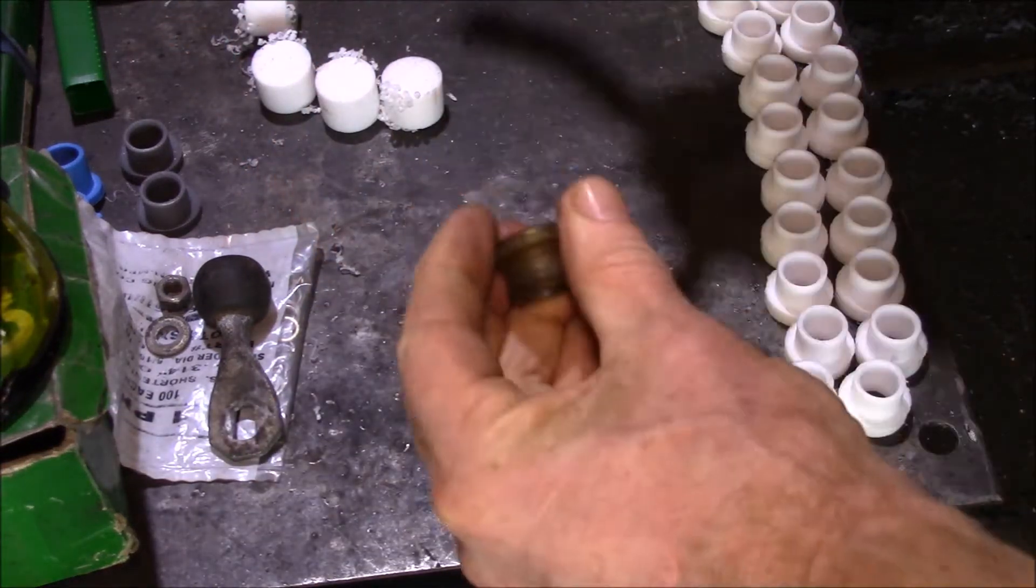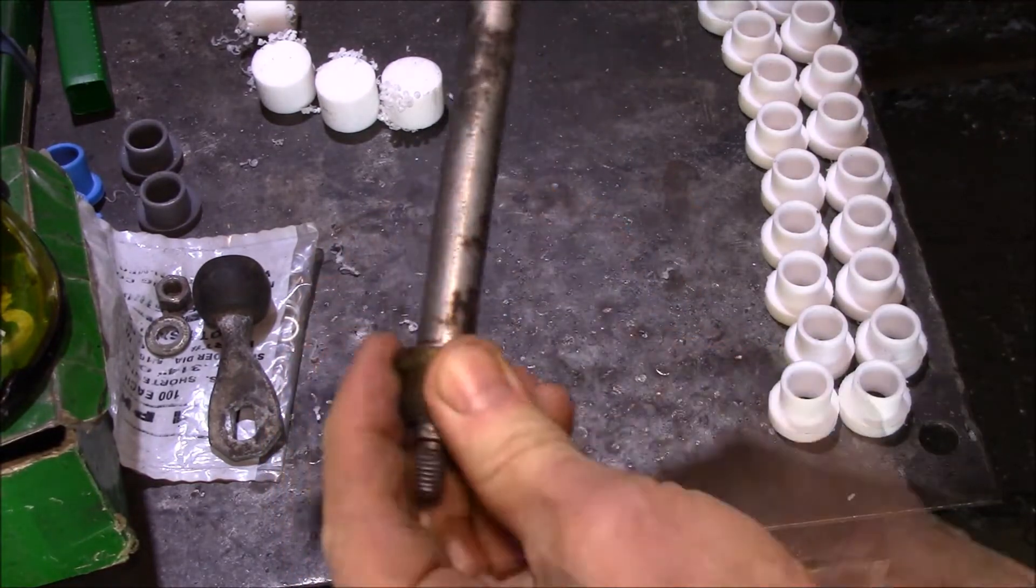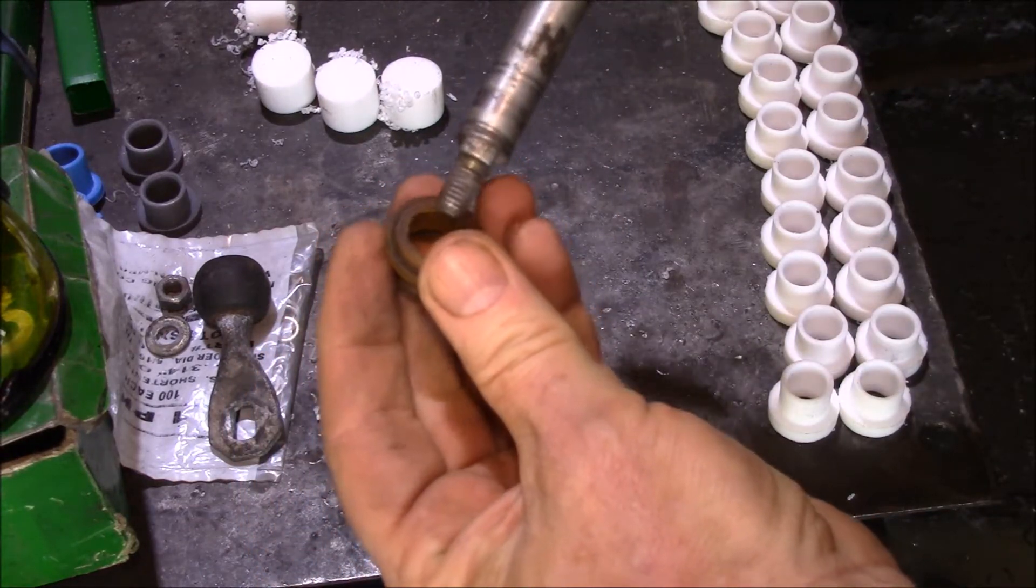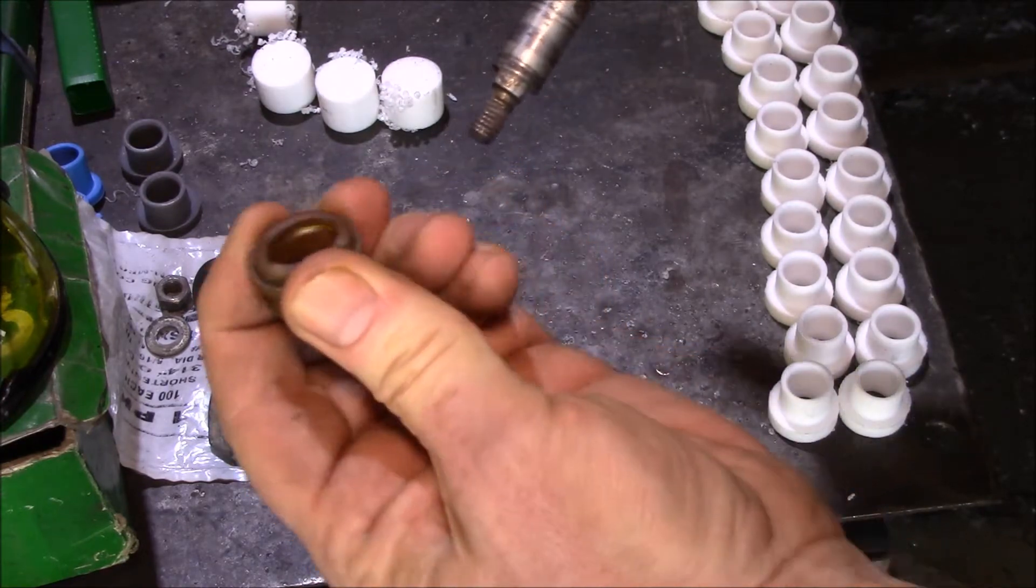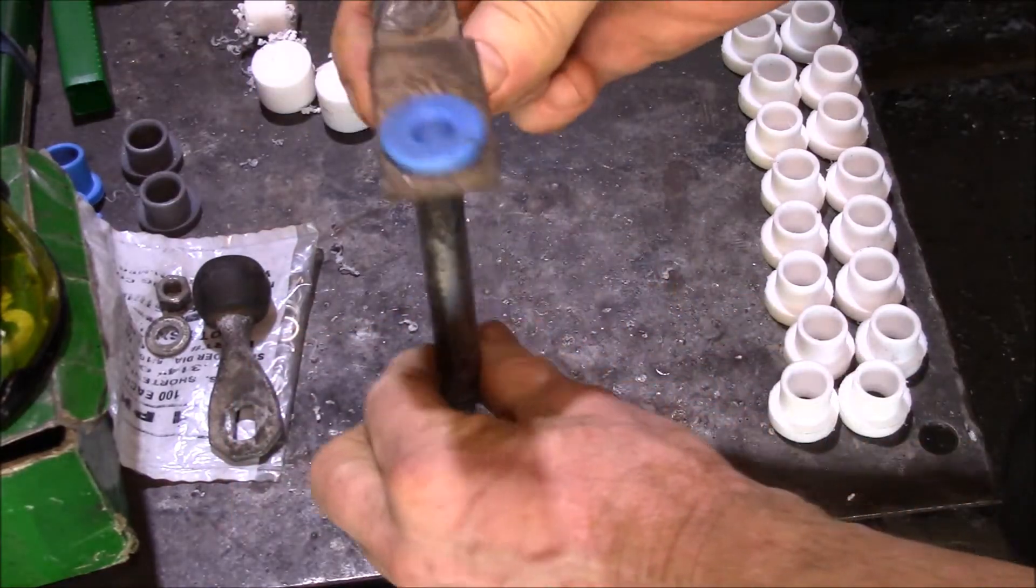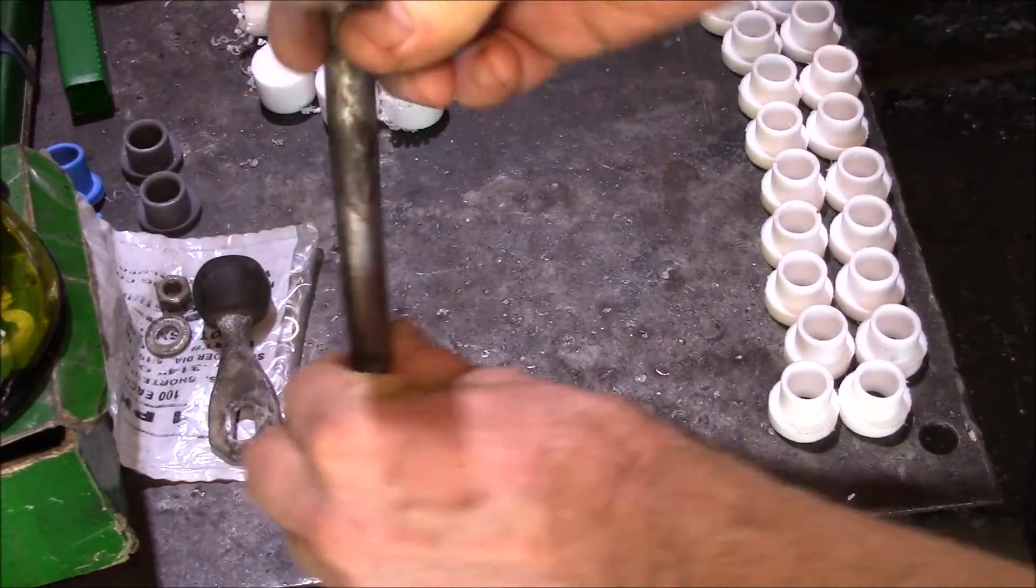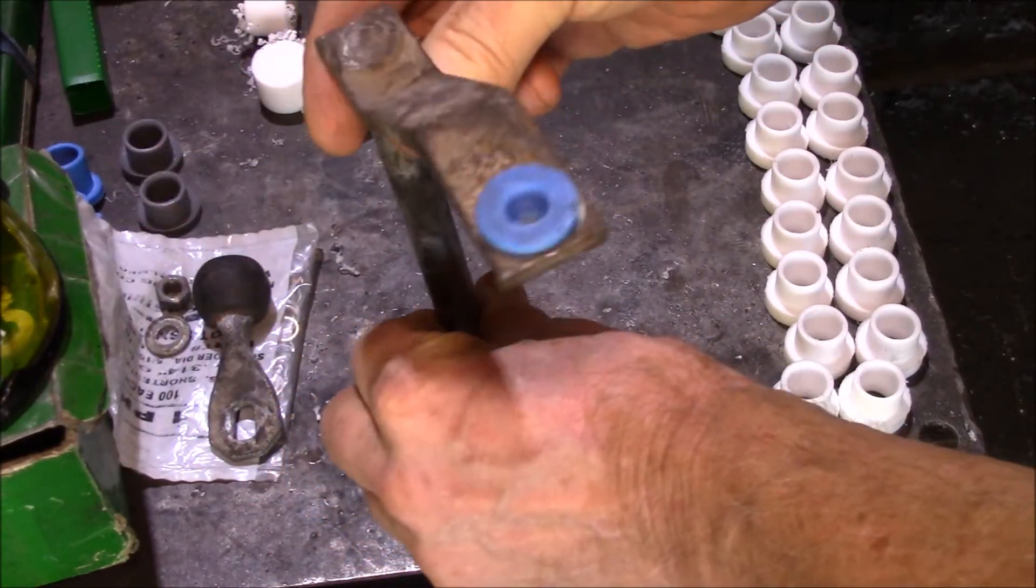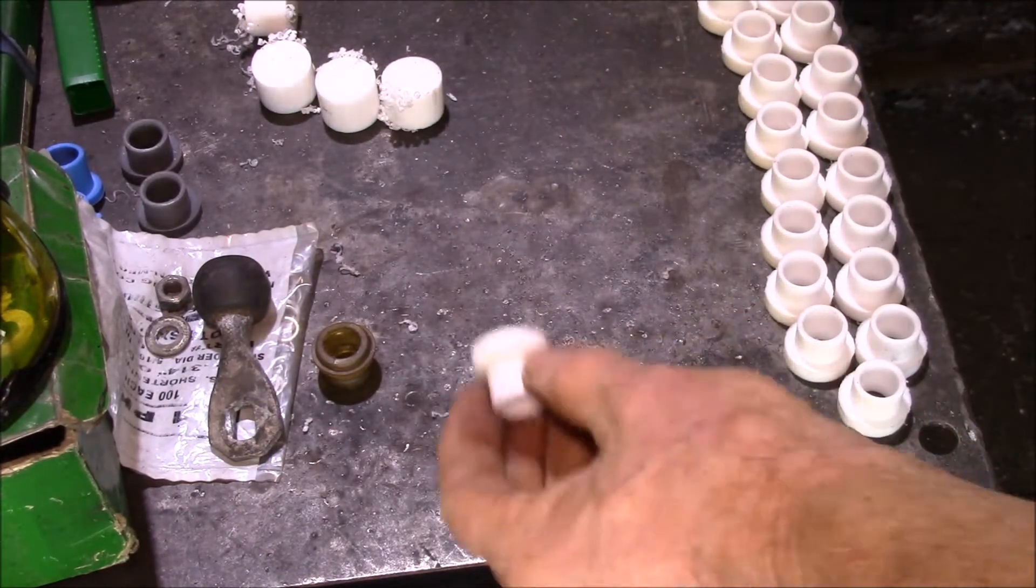The problem is these bushings are made out of squishy polyurethane. Because it's squishy, they let this thing move all over the place. Over time this polyurethane gets hard and brittle as it loses the plasticizers, and this will actually wear down and start breaking. At that point your relay shaft wobbles all over and you're not getting the motion that makes the shifter work.